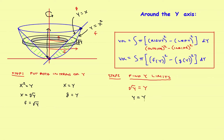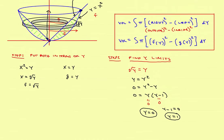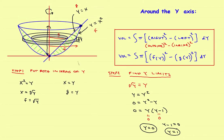Factoring out a y gives y times (y minus one) equals zero. Setting each factor equal to zero and solving: y equals zero is one limit, and y minus one equals zero gives y equals one as the other limit. On the picture, you integrate from y equals zero at the bottom all the way up to y equals one at the top. So those are the limits on your integral.